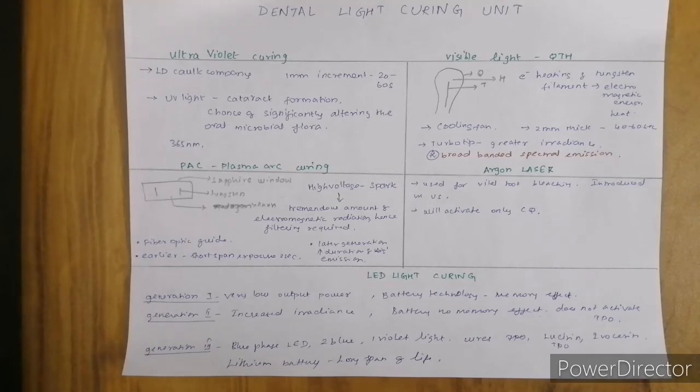Important disadvantages of first and second generations were they couldn't activate TPO and ivosirin. When using bleach shades, they mostly consist of TPO photo initiators.